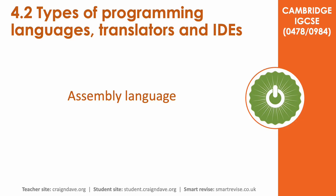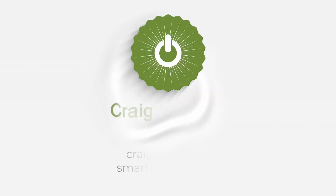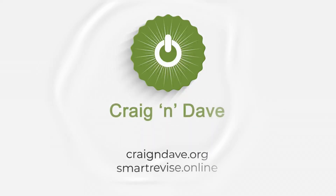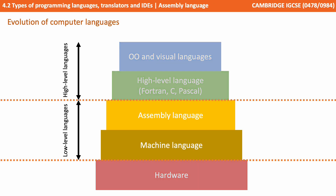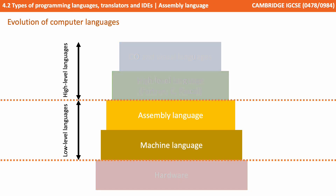In this video we discuss assembly language. The diagram shown here represents the evolution from hardware to machine and assembly languages, known as low-level, on to high-level languages.